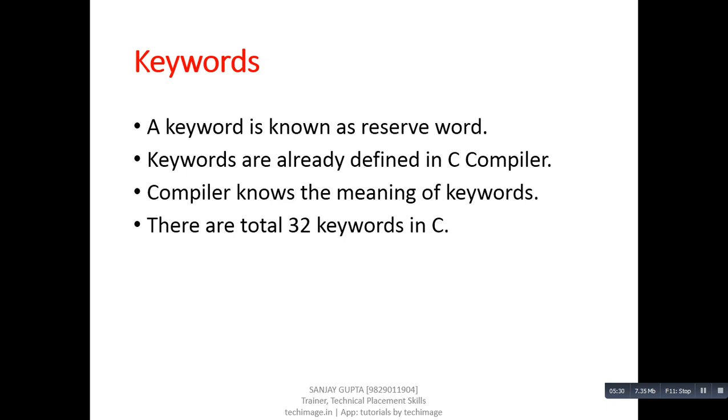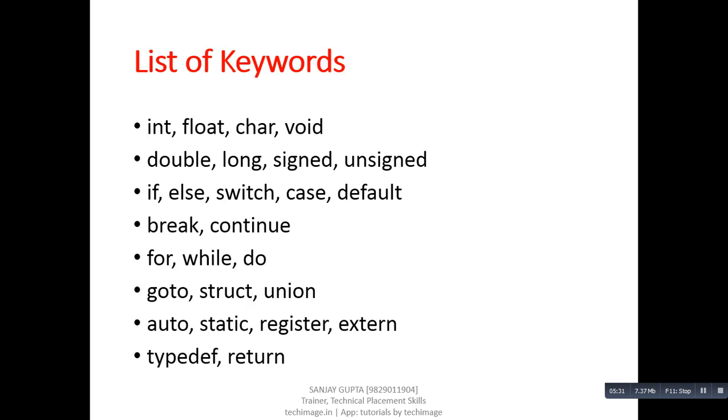This list is displaying all possible keywords which are available in C. For example, int, float, char, void, double, long, signed, unsigned, if, else, switch, case, default, break, continue, for, while, do, goto, struct, union, auto, static, register, external, typedef, and return. All these words are predefined or reserved words. And each word has its significant meaning.